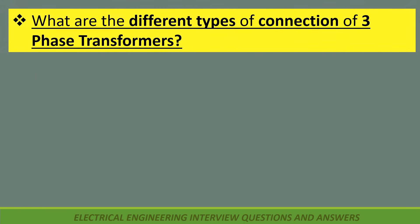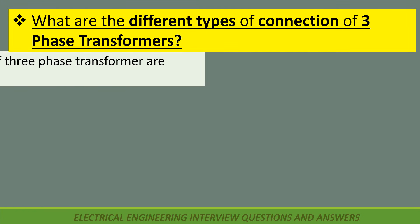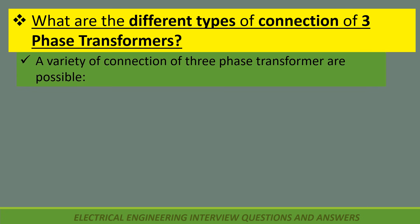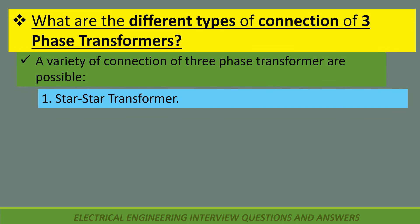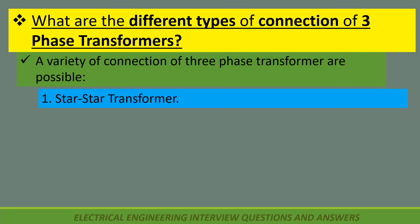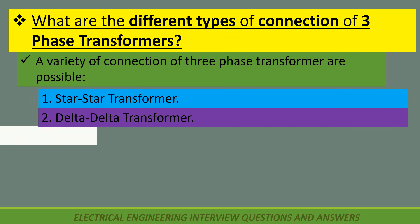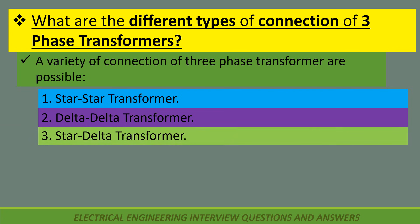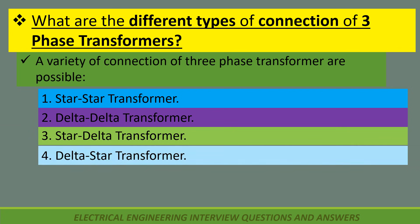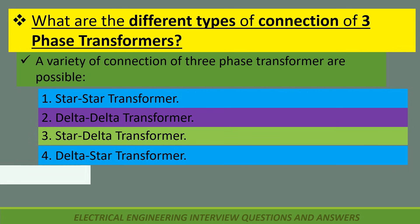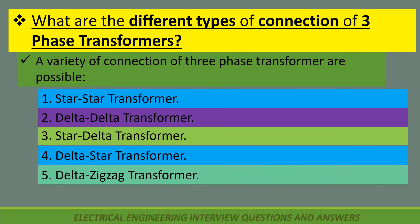What are the different types of connection of three phase transformers? A variety of connections are possible: Star-Star transformer, Delta-Delta transformer, Star-Delta transformer, Delta-Zigzag transformer.